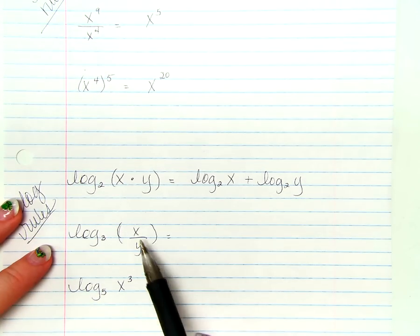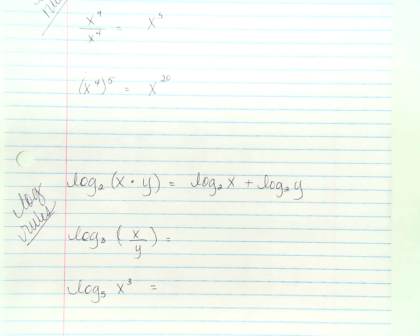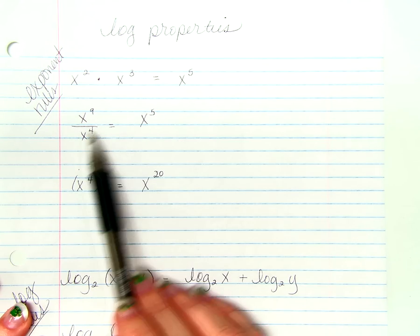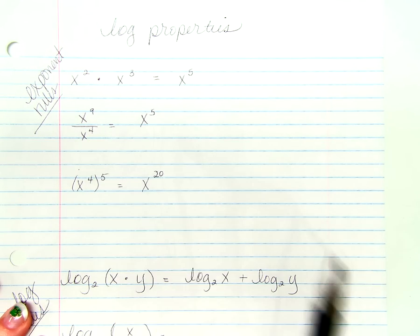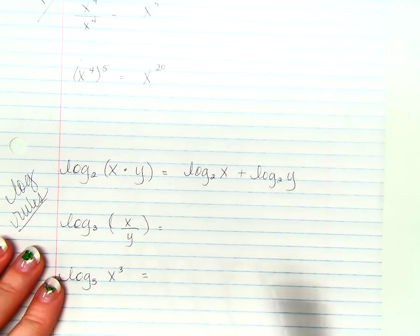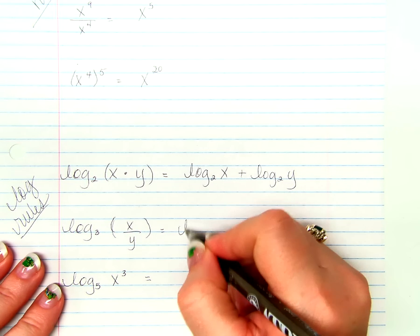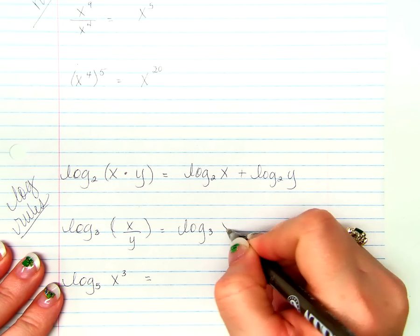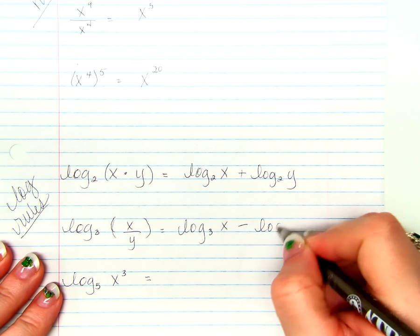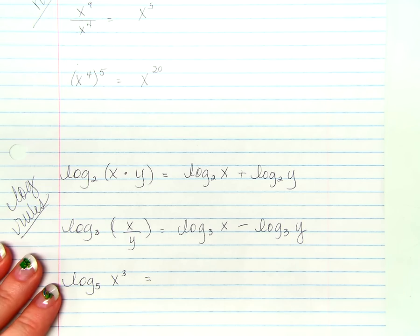What if we are dividing something inside of a logarithm? Log base 3 of x divided by y. Well, when we divided, what did we do with the exponents? We subtracted. So, guess what we are doing with the values inside of the log? Log base 3 of x minus log base 3 of y.